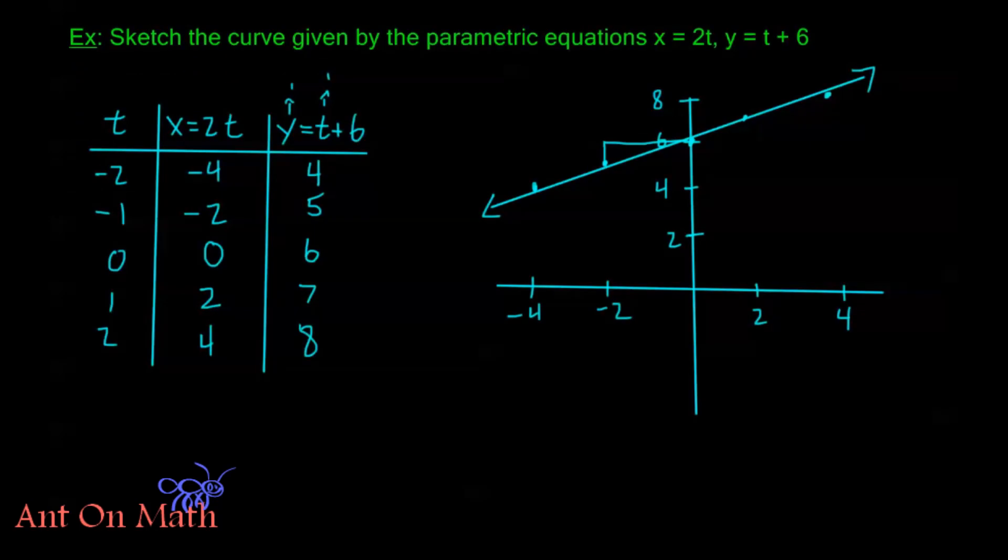Now let's start off with the example we had last time. Let's see if we can eliminate the parameter and find the equation of this line. Now we usually want to, if we're just given numbers and t's, one way we can do it is to solve for t and then plug that solution into the other equation.